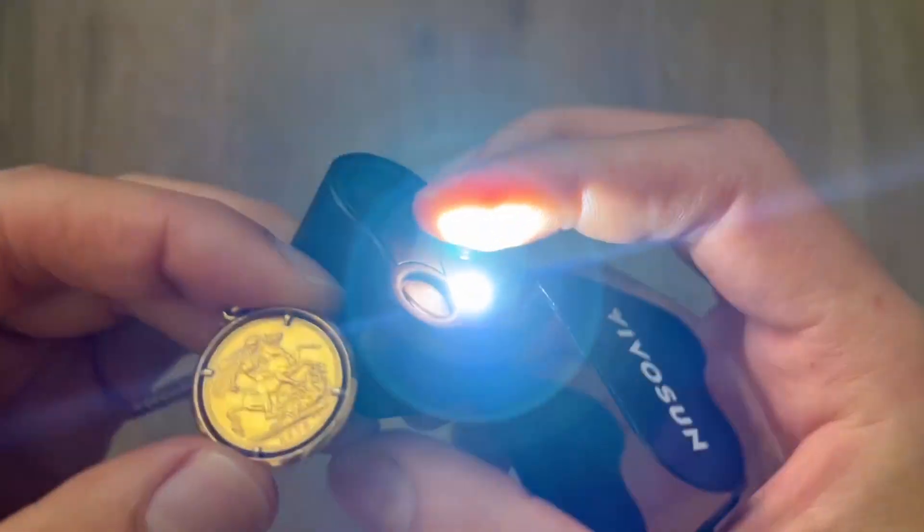The larger one is going to be the larger magnification or I guess less magnification at 30x and the smaller one is going to be the 60x.